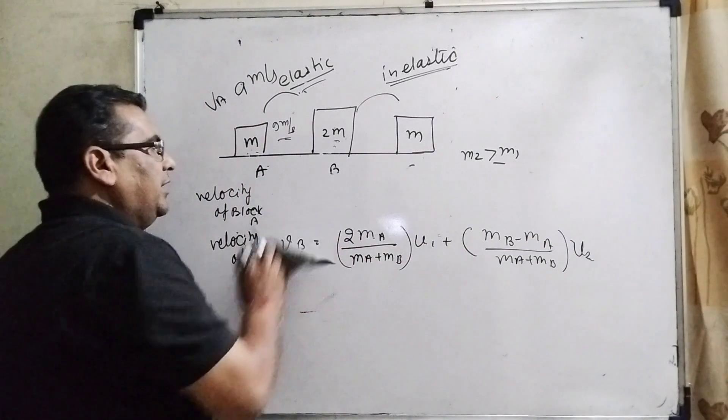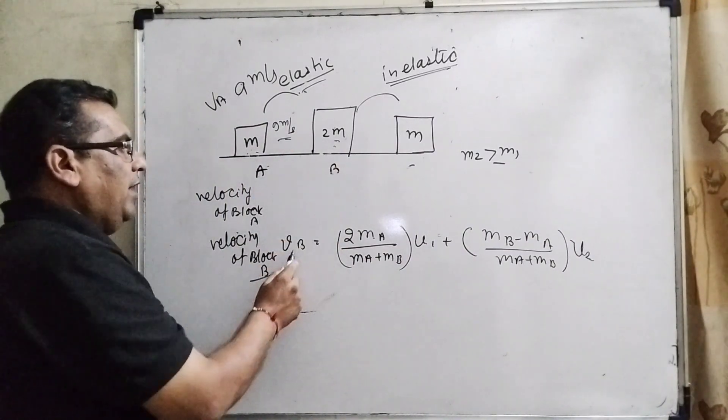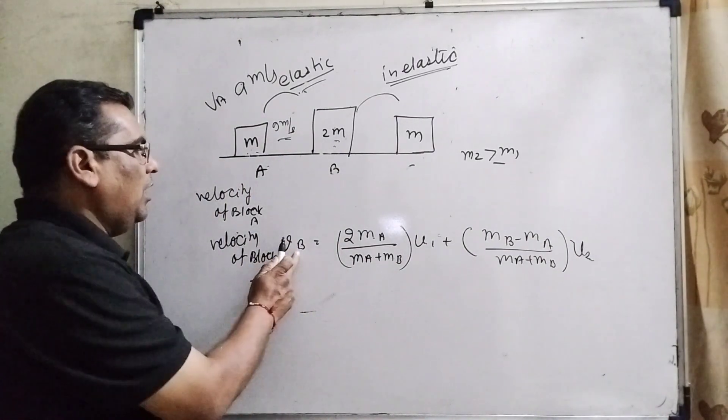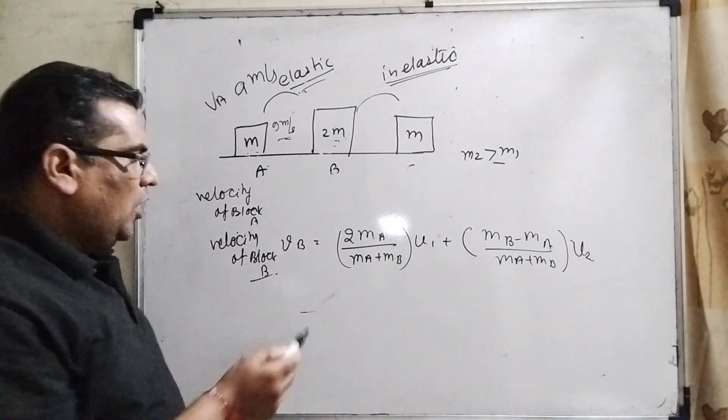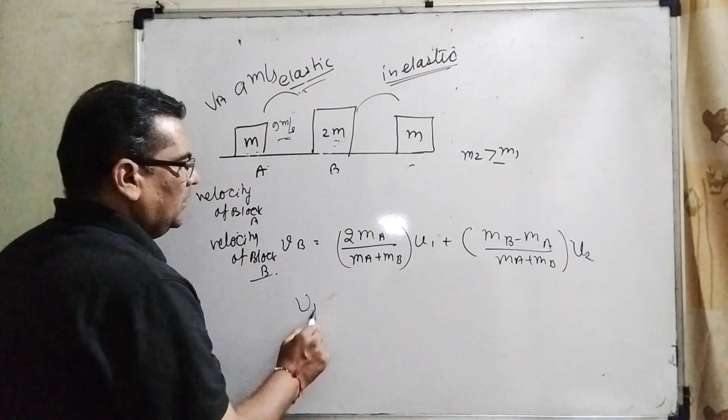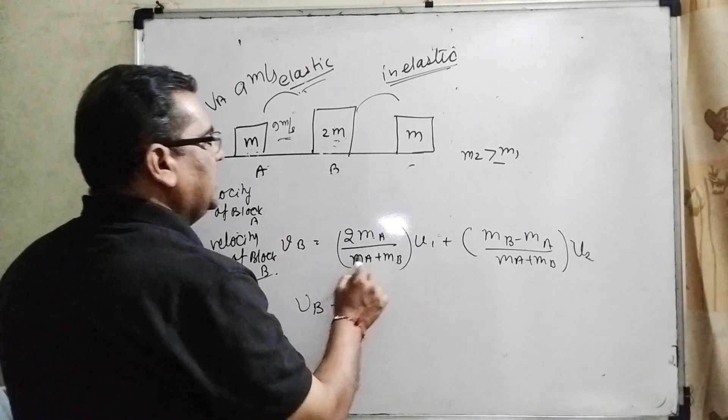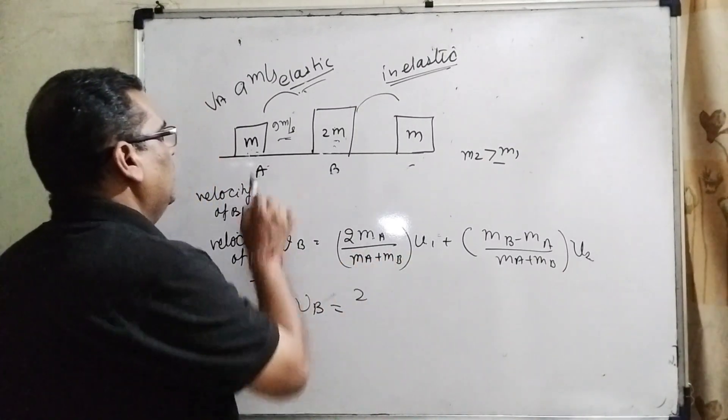We have to find after first collision, we have to get the velocity of VB. Is it clear? Now substitute this value. So here we have to find the velocity of VB. You can see that 2MA. What is given?